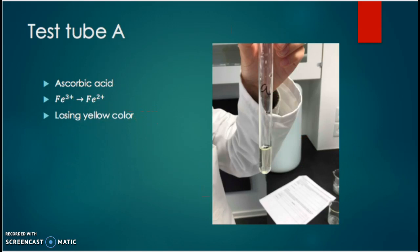Before doing test tube three, we mixed ascorbic acid with a solution containing Fe³⁺ ions. The ascorbic acid reduces the iron three ions to iron two ions, which we could see by the solution also losing its yellow color. Iron three ions is a solution that has a yellow color, and when it reduced the Fe³⁺ ions to Fe²⁺ ions, it lost its yellow color.